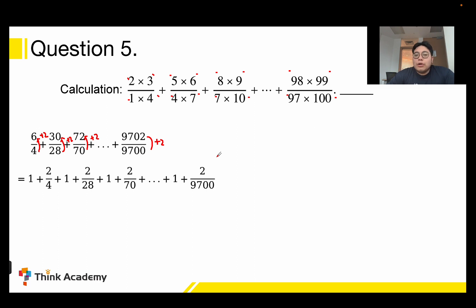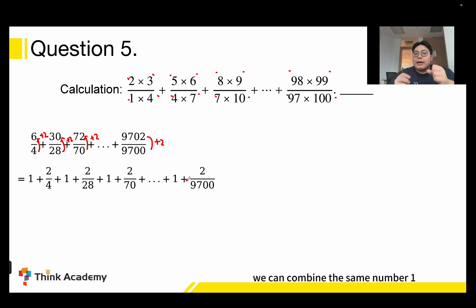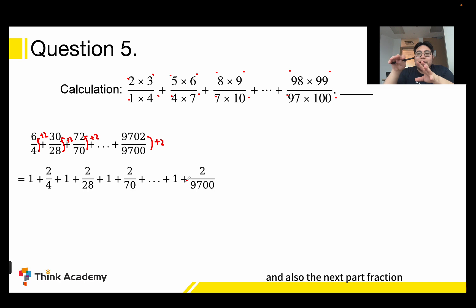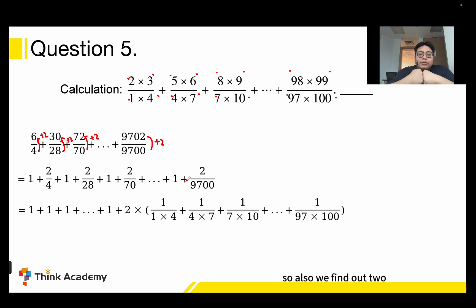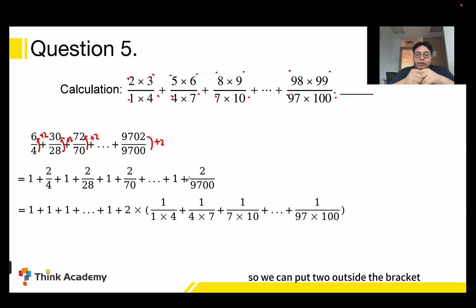And continuing up to plus 2/9700. We can combine all the 1s together, and for the fractional part we use a bracket. Since we always have a 2 in the numerator, we can factor out the 2 outside the bracket.